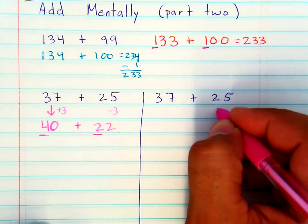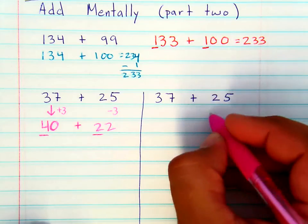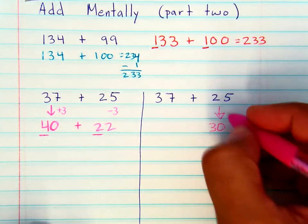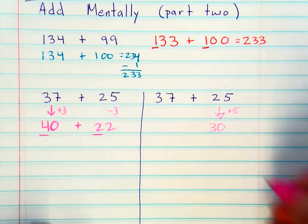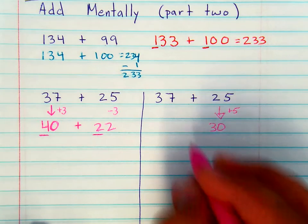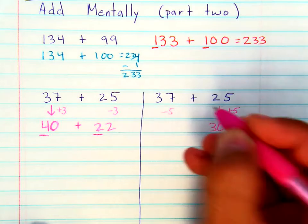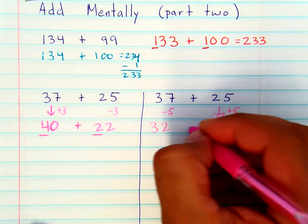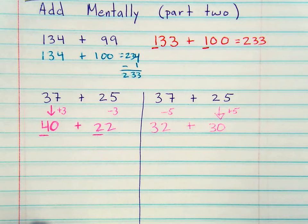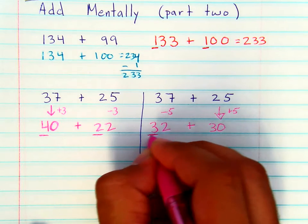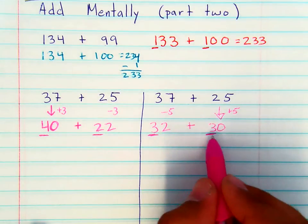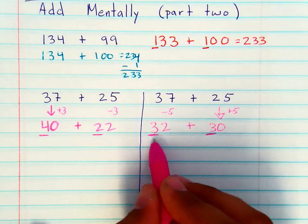You could do the same thing by bringing 25 up to 30. You've essentially added 5 to the problem, and you're going to take 5 away from this side, so it's 32. 32 plus 30 is much easier to add in your head because you're only adding the tens place. 32 plus 30 is 62.